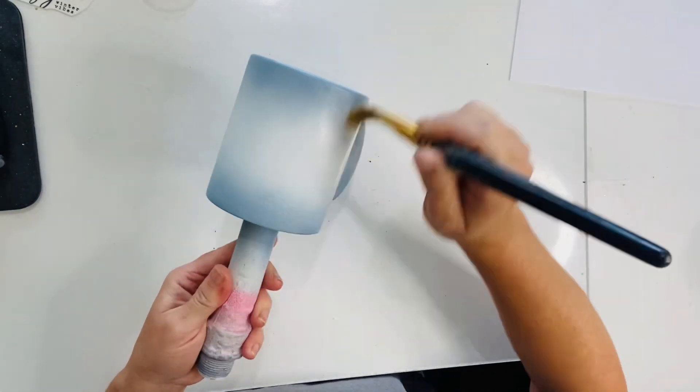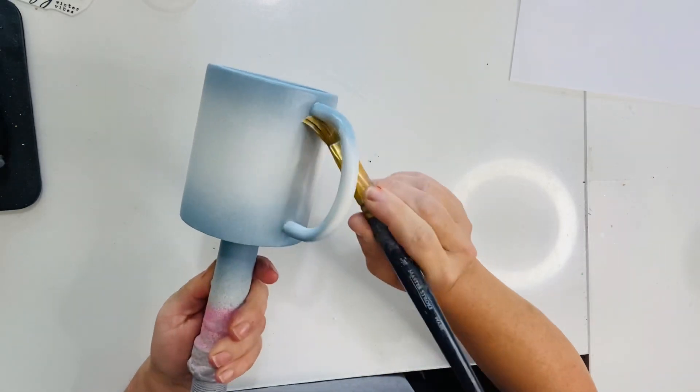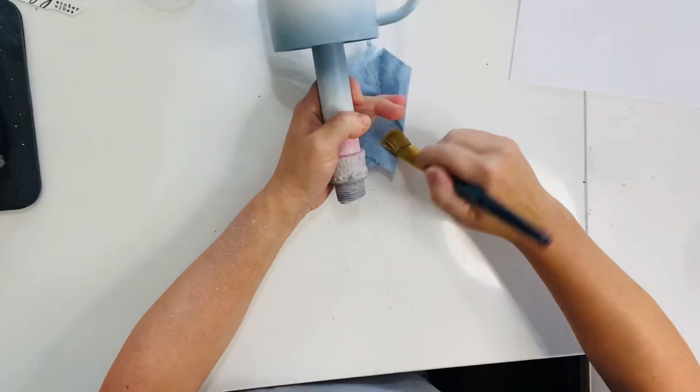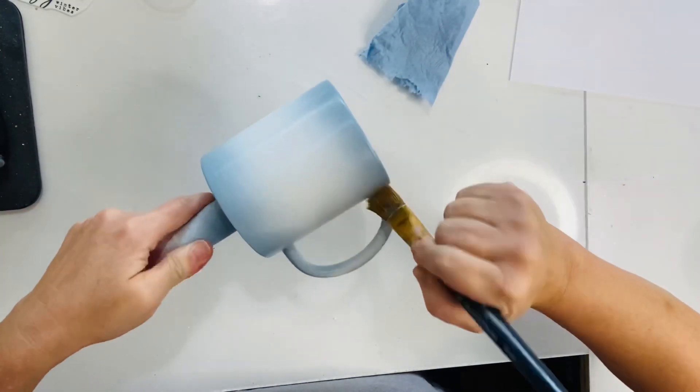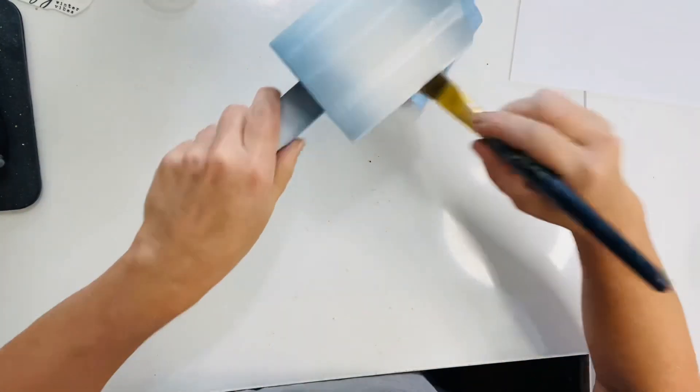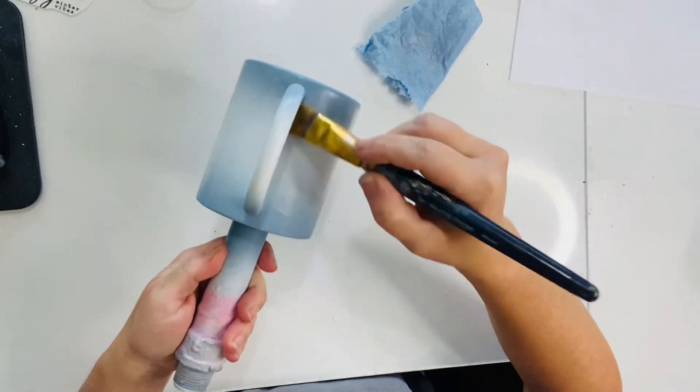Pay special attention to your handle. Make sure you get around all those edges because you don't want to have to miss any spots in this. If you do, you can always cover it up later with a snowflake or a chunky glitter. But for now, let's just make sure we get this on here. So again, go ahead and wipe this around in circles.